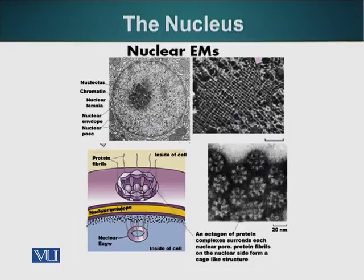Here on the screen you can see the structure of nuclear pores. The nuclear pores have octagonal symmetry — this is an electron micrograph of a nuclear pore. Here you can also see the nuclear lamina in this electron micrograph of the nucleus.